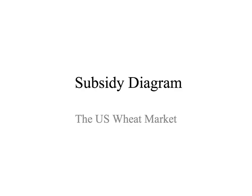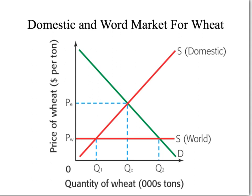In this video, we'll talk about what happens when the government intervenes in a protectionist way and provides a subsidy — in this case, to U.S. wheat producers in the U.S. market. First, it's important to take a look at the world market for wheat before the U.S. opens its market up to international producers. There's a domestic supply curve, a domestic demand curve, and an equilibrium point established at P.E. and a quantity of Q.E.